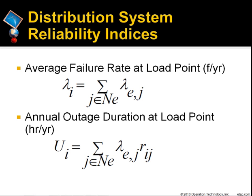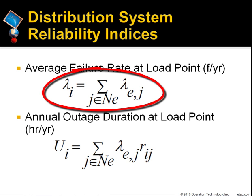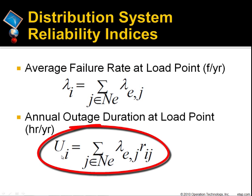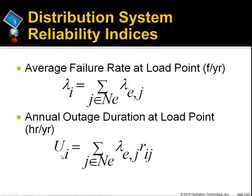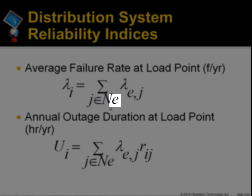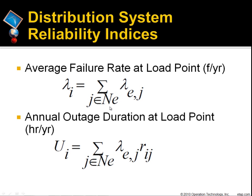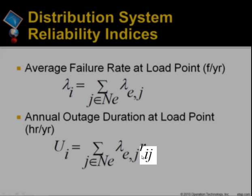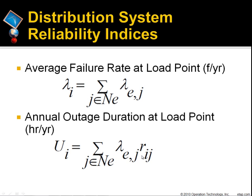Now let's summarize the most common distribution system reliability indices. The average failure rate, lambda i, and annual outage duration, u_i, at load point i are calculated by these equations, where lambda_e,j is the average failure rate of element j or element combination j such as double contingency, and e is the total number of elements whose faults will interrupt load point i. R_i,j is the failure duration at load point i due to the failure of element j.